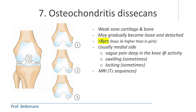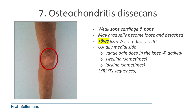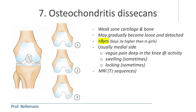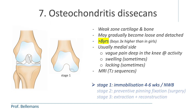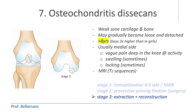Osteochondritis dissecans is a very localized weak zone of cartilage and bone that may gradually become loose (stage 2) and detached (stage 3). It usually occurs at age 8 or older, and the frequency is 3 times higher in boys than in girls. The weak spot is frequently on the medial side of the knee but can be anywhere. The pain is often vague, somewhere deep in the knee, occurring especially during activity. Sometimes there is also swelling or a locking sensation, which means it is already in stage 2 or 3. An MRI is needed to determine the correct stage. Stage 1 treatment is immobilization in a cast or brace with 4 to 6 weeks of non-weight bearing; stage 2 requires preventive pinning fixation by surgery; and stage 3 requires surgical extraction with reconstruction of the defect.